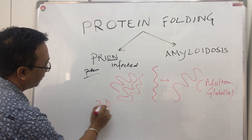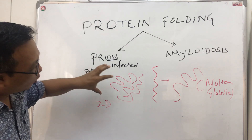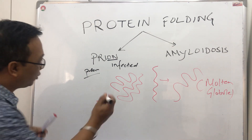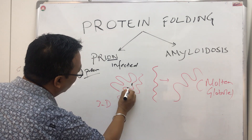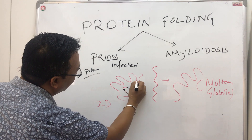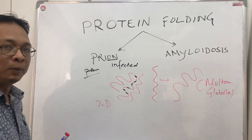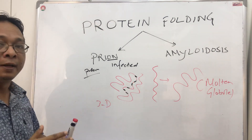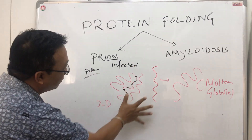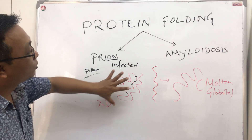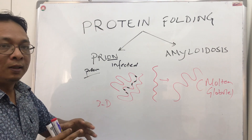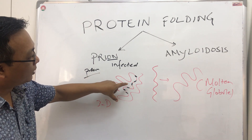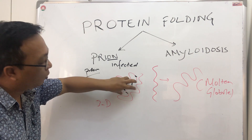When a protein becomes biologically active, it takes on a three-dimensional shape. The hydrophobic parts of the protein are in the core, hidden away from the hydrophilic aqueous environment outside. This arrangement protects and stabilizes the protein.